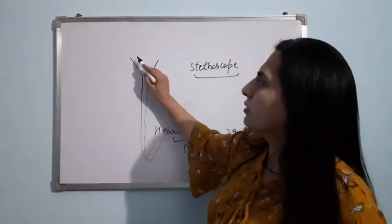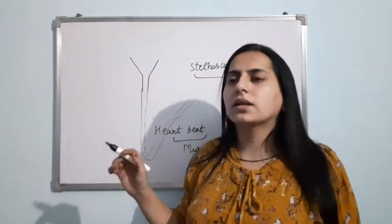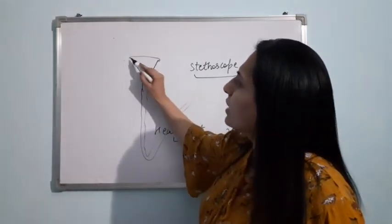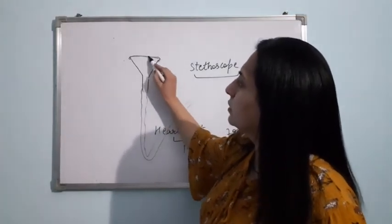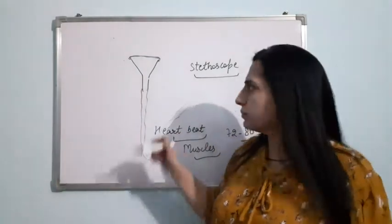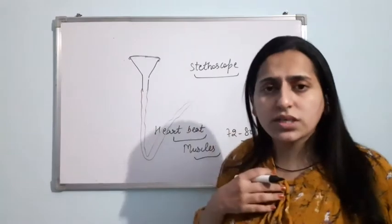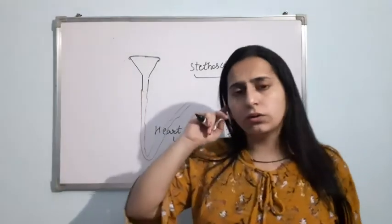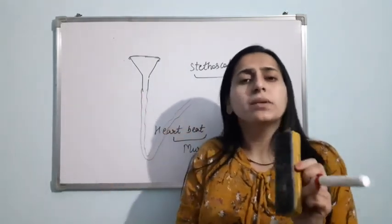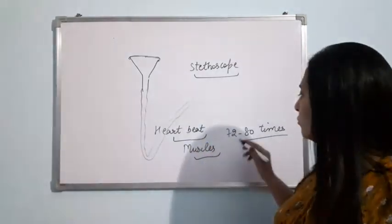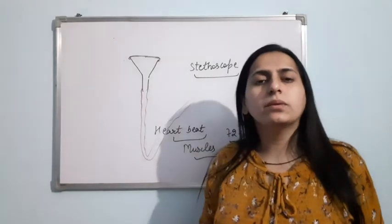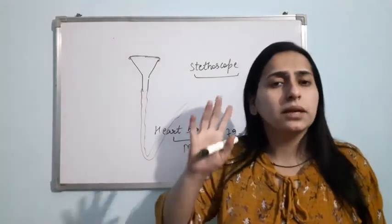And on the mouth of the funnel, we can attach a balloon sheet or a rubber sheet, and we have to stretch the sheet tightly. Now here is your homemade stethoscope. Just keep this funnel on your chest and this tube on your ear, and then you can listen to the sounds of the heart. For one minute, you will hear the sound 72 to 80 times, which is the rate of the heartbeat — 72 to 80 times in a minute.